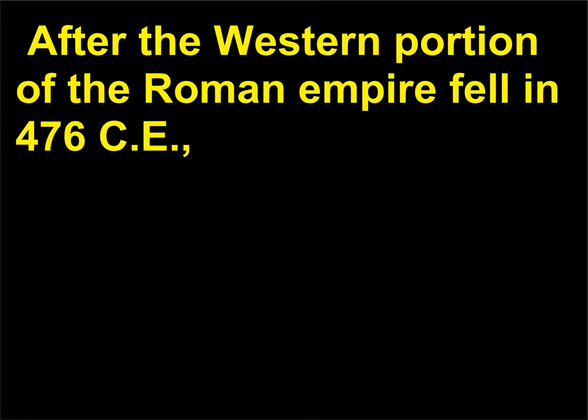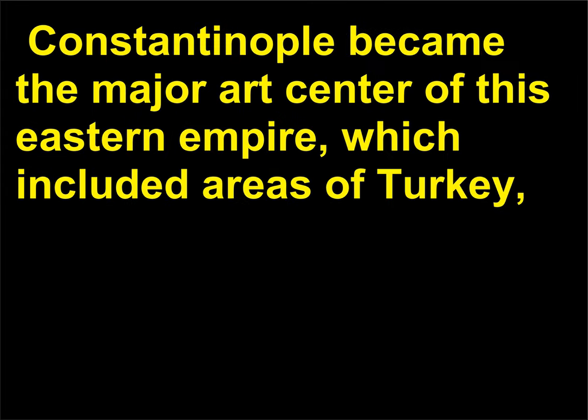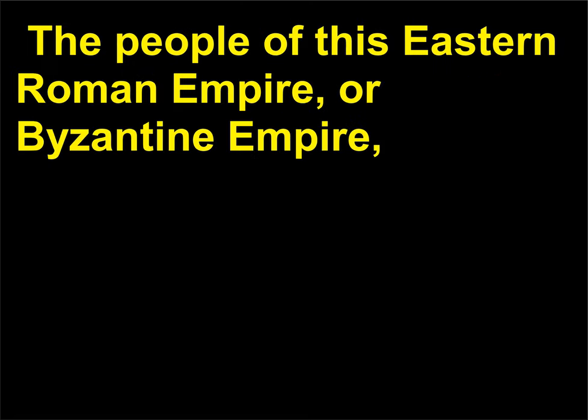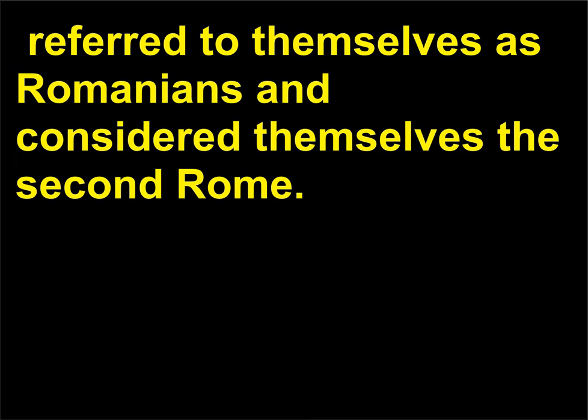After the western portion of the Roman Empire fell in 476 CE, Constantinople became the major art center of this Eastern Empire, which included areas of Turkey, Greece, Italy, Eastern Europe, and portions of North Africa. The people of this Eastern Roman Empire, or Byzantine Empire, referred to themselves as Romanians and considered themselves the second Rome.